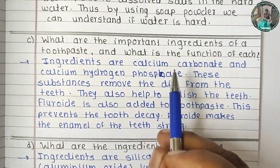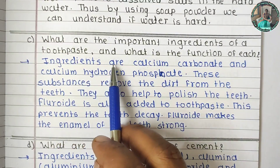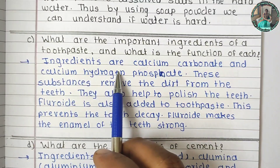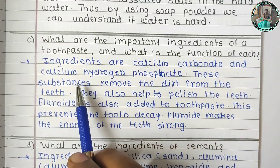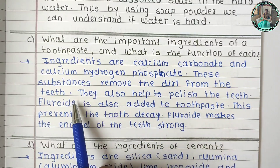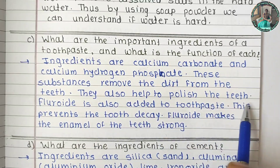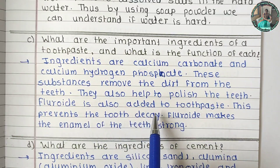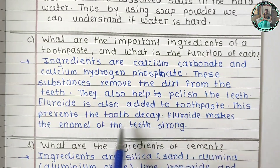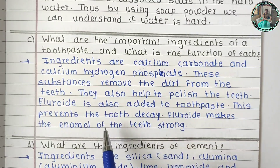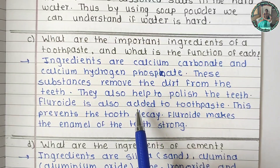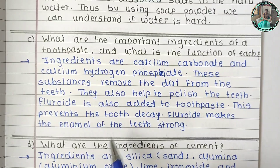What are the important ingredients of toothpaste and what is the function of each? Ingredients are calcium carbonate and calcium hydrogen phosphate — these substances remove dirt from the teeth and help to polish the teeth. Fluoride is also added to toothpaste, which prevents tooth decay and makes the enamel of the teeth stronger.